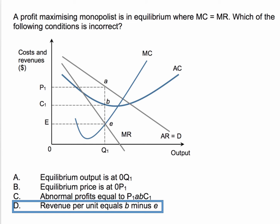The secret to this is to go through each option in turn. Is the equilibrium output at OQ1? Yes, because that's where marginal cost intersects marginal revenue at point e. Is the equilibrium price OP1? Yes, because you then draw up to the demand curve, or the average revenue curve, to find the price per unit.